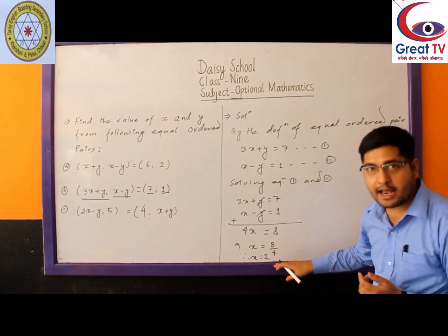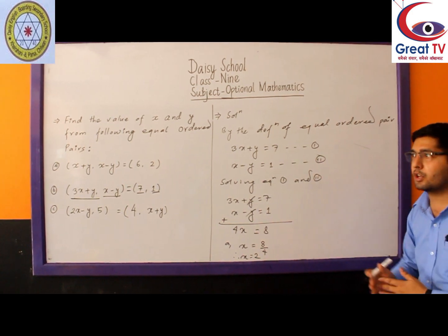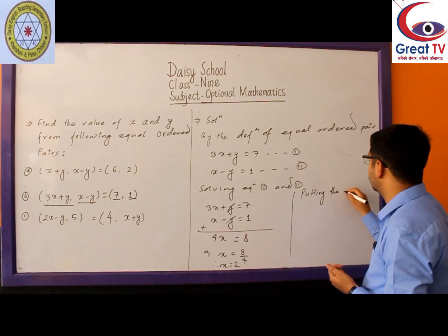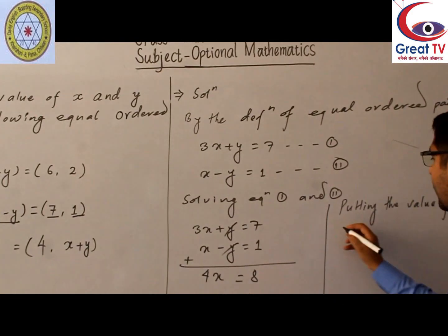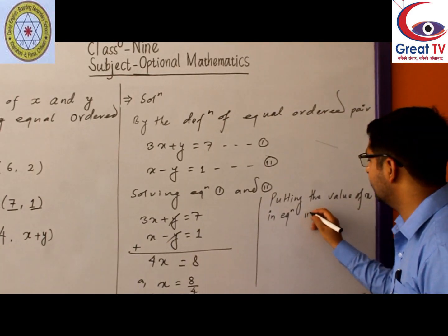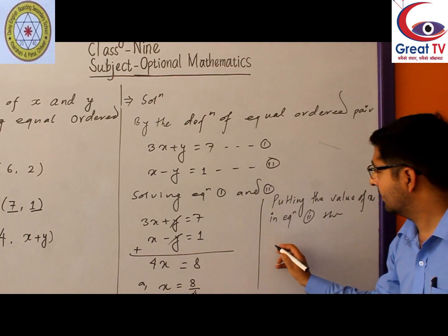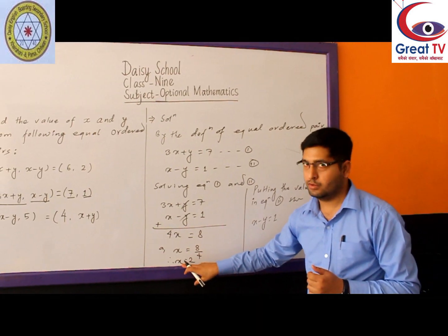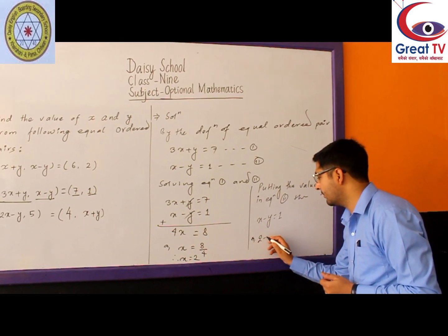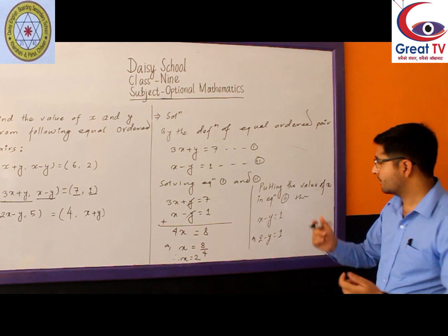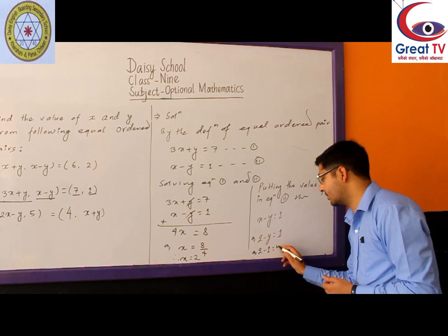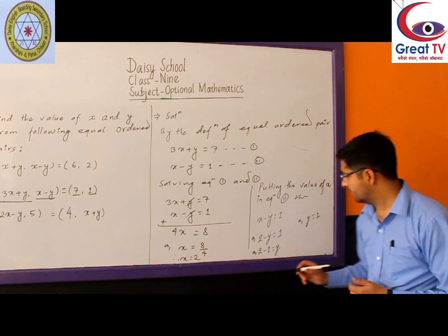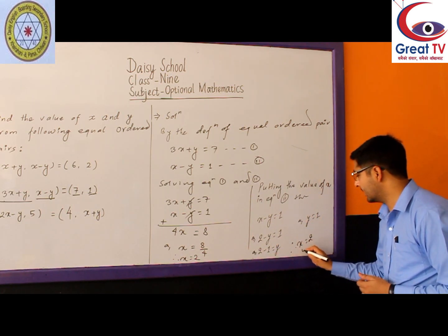Now substitute X = 2 into Equation 2 to find Y: 2 − Y = 1. Rearranging, Y = 2 − 1 = 1. Therefore, X = 2 and Y = 1.